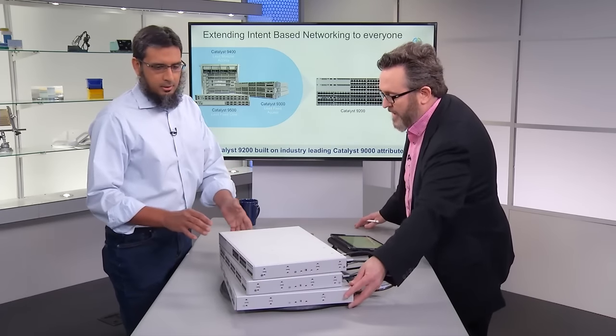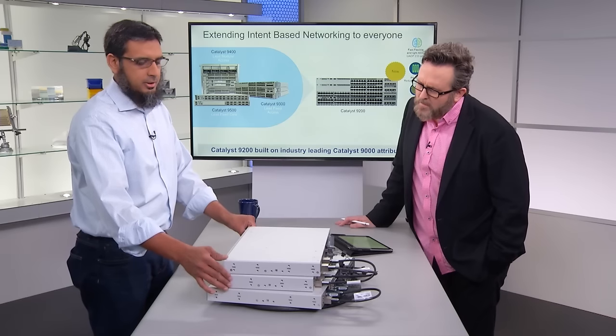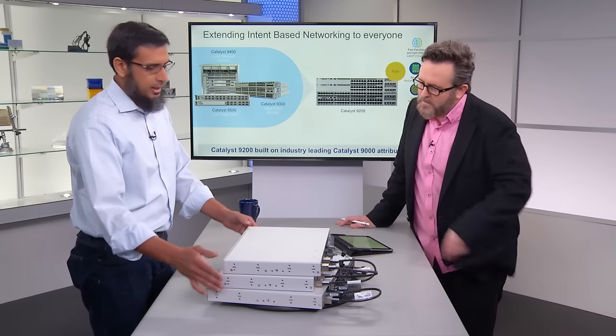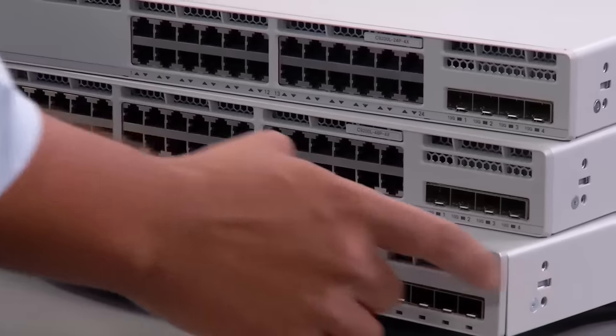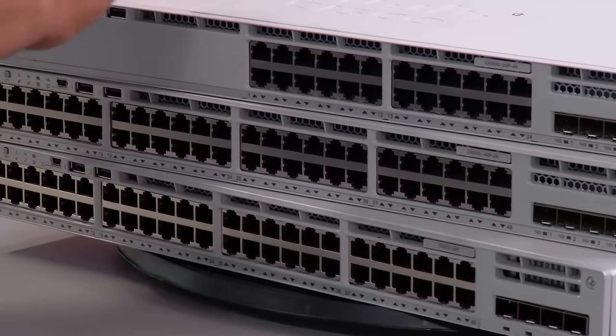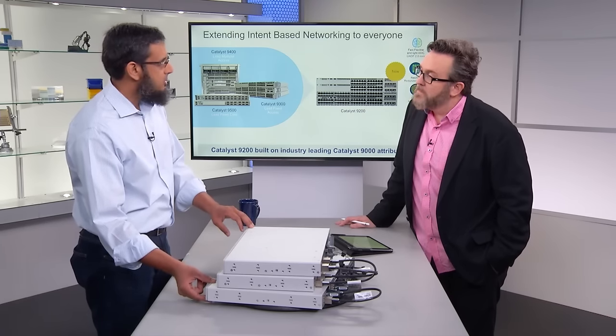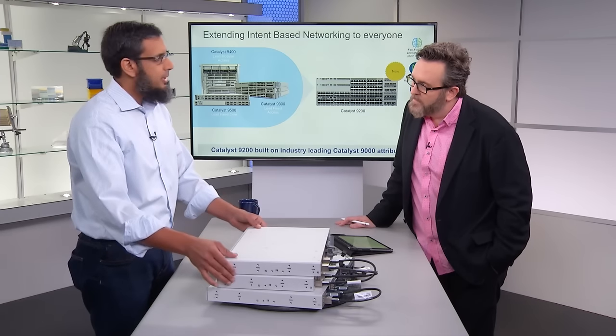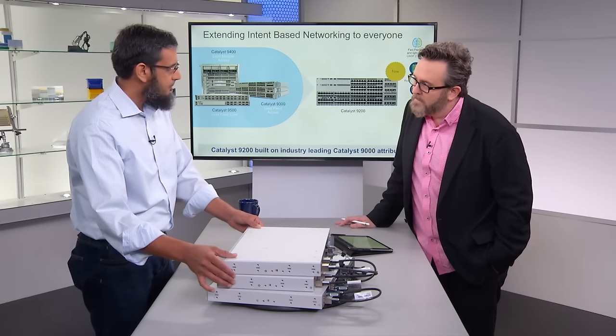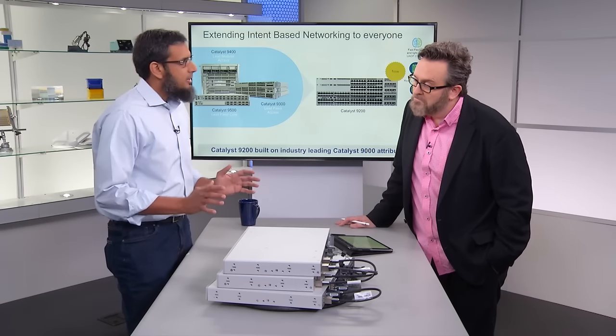The Catalyst 9200 series comes in two flavors. The Catalyst 9200L, which is the fixed version — those are the top units here — and then the bottom one is the Catalyst 9200. The key difference between the 9200L and the 9200 is the modularity of the uplink and fans on the 9200. On the 9200L, we have fixed uplinks and fans. In the entire 9200 series, we have added a lot more modularity and redundancy to bring maximum resiliency.